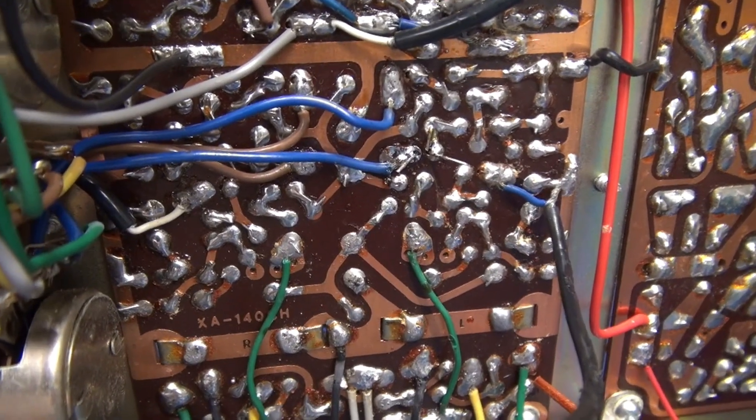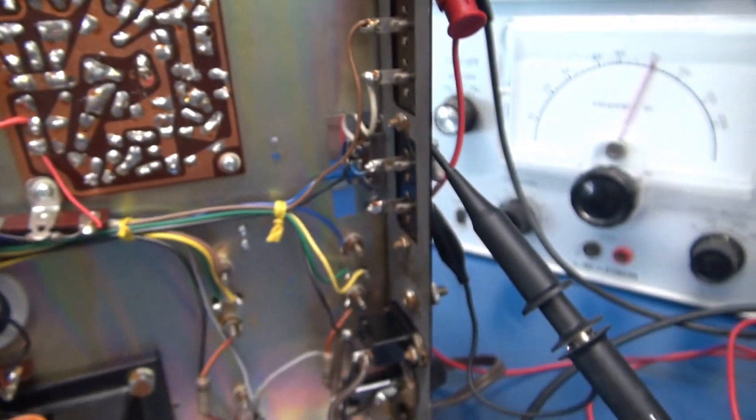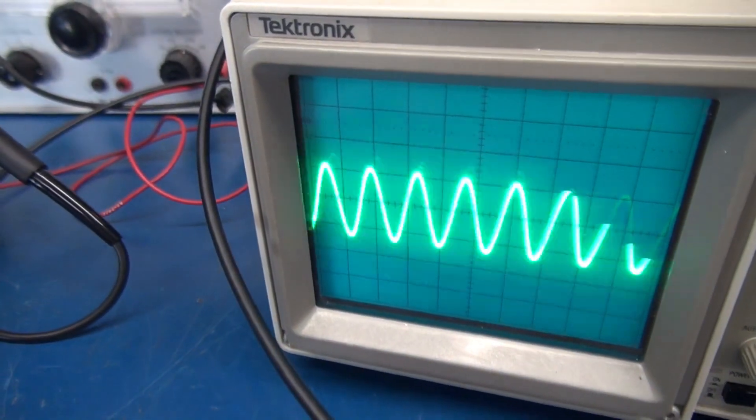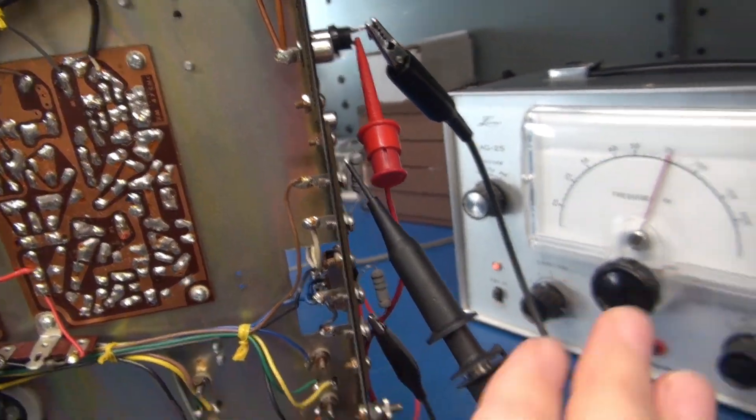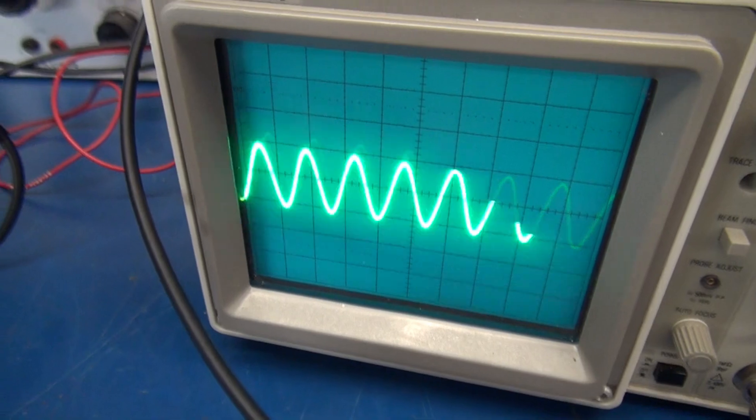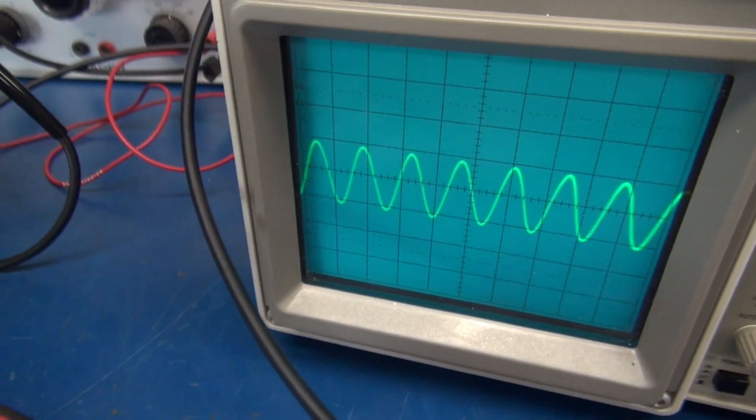Alright, there's a new cap installed. I haven't clipped the lead yet, but I'm monitoring the left channel of the speaker output. There it is on the scope. Go up here to the right. Got equal output pretty much on both channels.